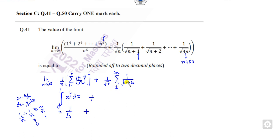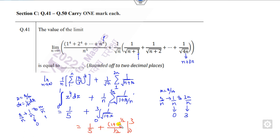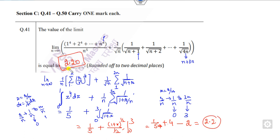Now for the second part, I can take root(n) as common outside. This becomes summation of 1/(1 + r/n). Taking x as r/n, with r varying from 1 to 3n, as n approaches infinity, x varies from 0 to 3. So this becomes integral of 1/(1+x)^(1/2) dx from 0 to 3, which gives [(1+x)^(1/2) / (1/2)] from 0 to 3. Substituting: (4)^(1/2) equals 2, so this is 2(2) minus 2(1) equals 2. Adding 1/5 gives 2.20. So the right answer is 2.20.